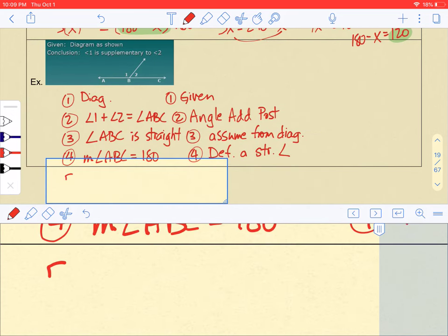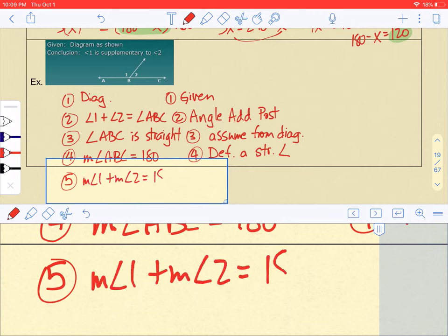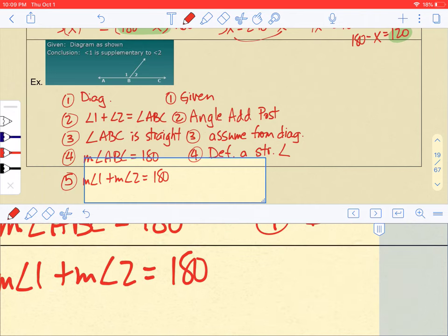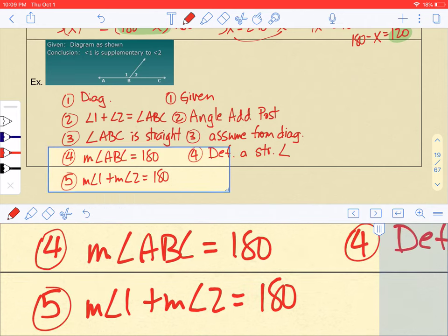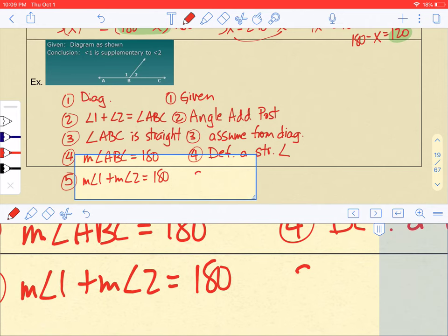Finally, line five: by substitution, the measure of angle one plus the measure of angle two has to equal 180. That's by substitution—we substituted from line two.